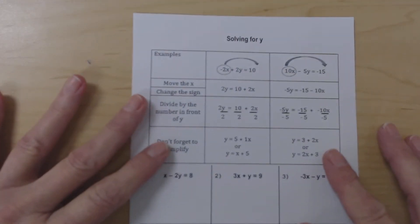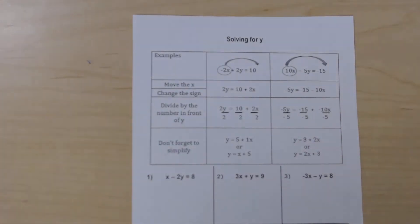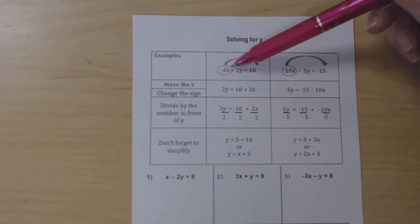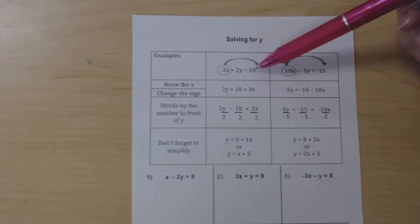So here we have several examples for solving for y. And we have this first one, negative 2x plus 2y equals 10.